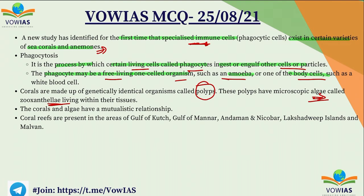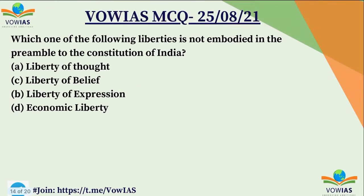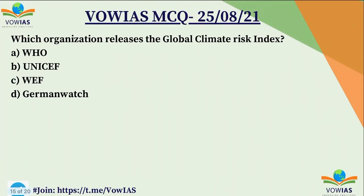Coral reefs in India are present in areas like Gulf of Kutch, Gulf of Mannar, Andaman and Nicobar Islands, Lakshadweep Islands and Malvan. Now the question of the day: which organization releases the Global Climate Risk Index? A. WHO, B. UNICEF, C. World Economic Forum, or D. NGO Germanwatch. Today we discussed the Children's Climate Risk Index — and this is the Global Climate Risk Index. Give your answer in the comment box and tomorrow we will discuss this question.